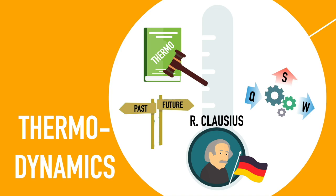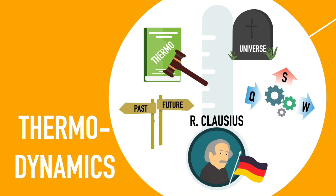At some point in the distant future, the entropy of the universe will eventually reach its maximum. This is known as the heat death of the universe, a state where no energy transformations can take place and time itself would cease to exist.